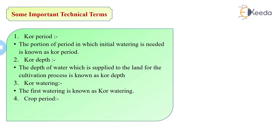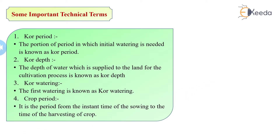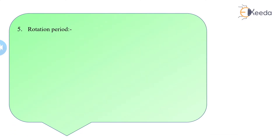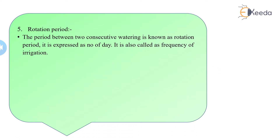Other than this, we have crop period. Unlike base period and core period, which are both related to the watering system, crop period is the period from the instant of sowing up to the harvesting of the crop — it is the whole period of a crop.